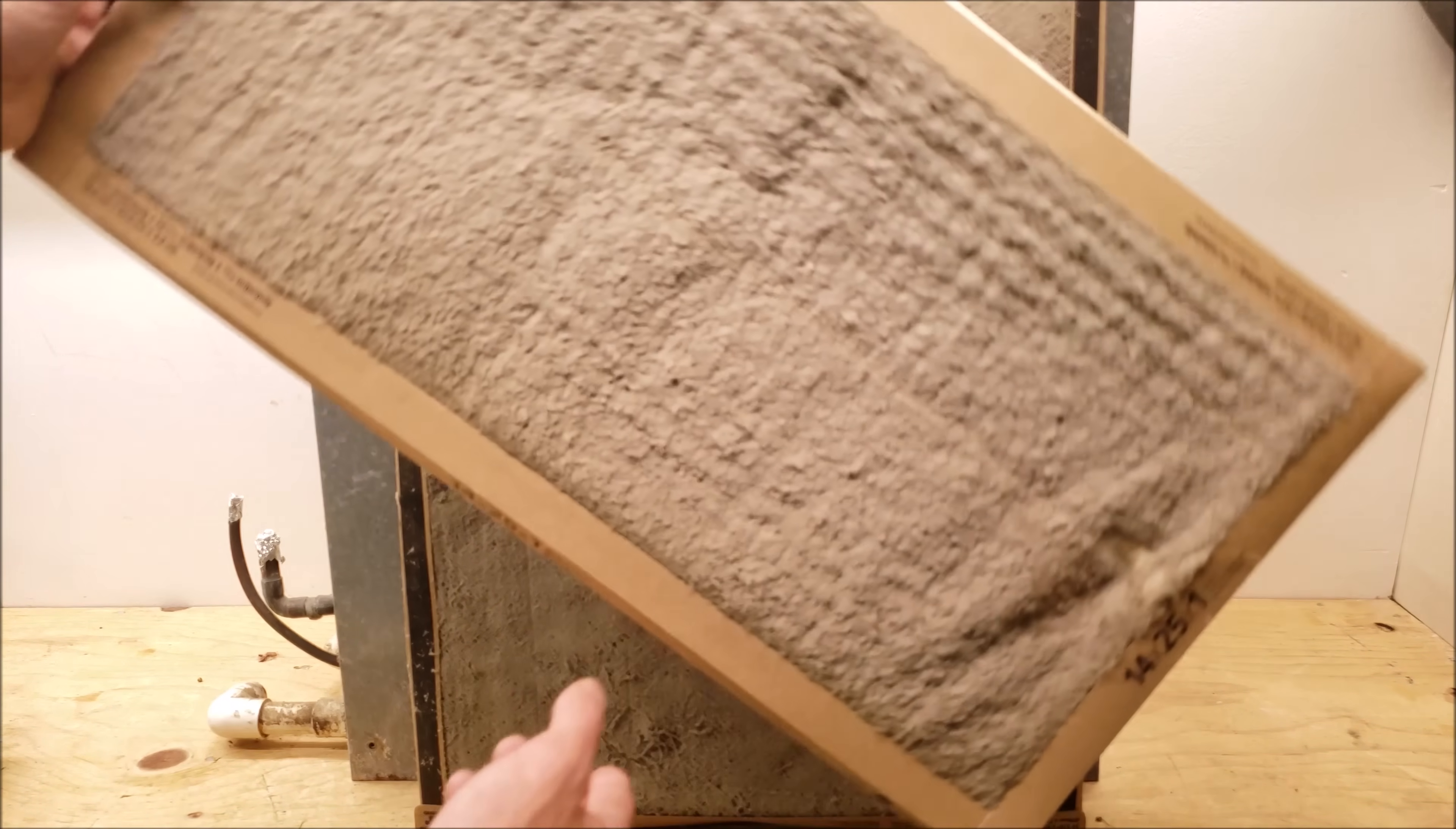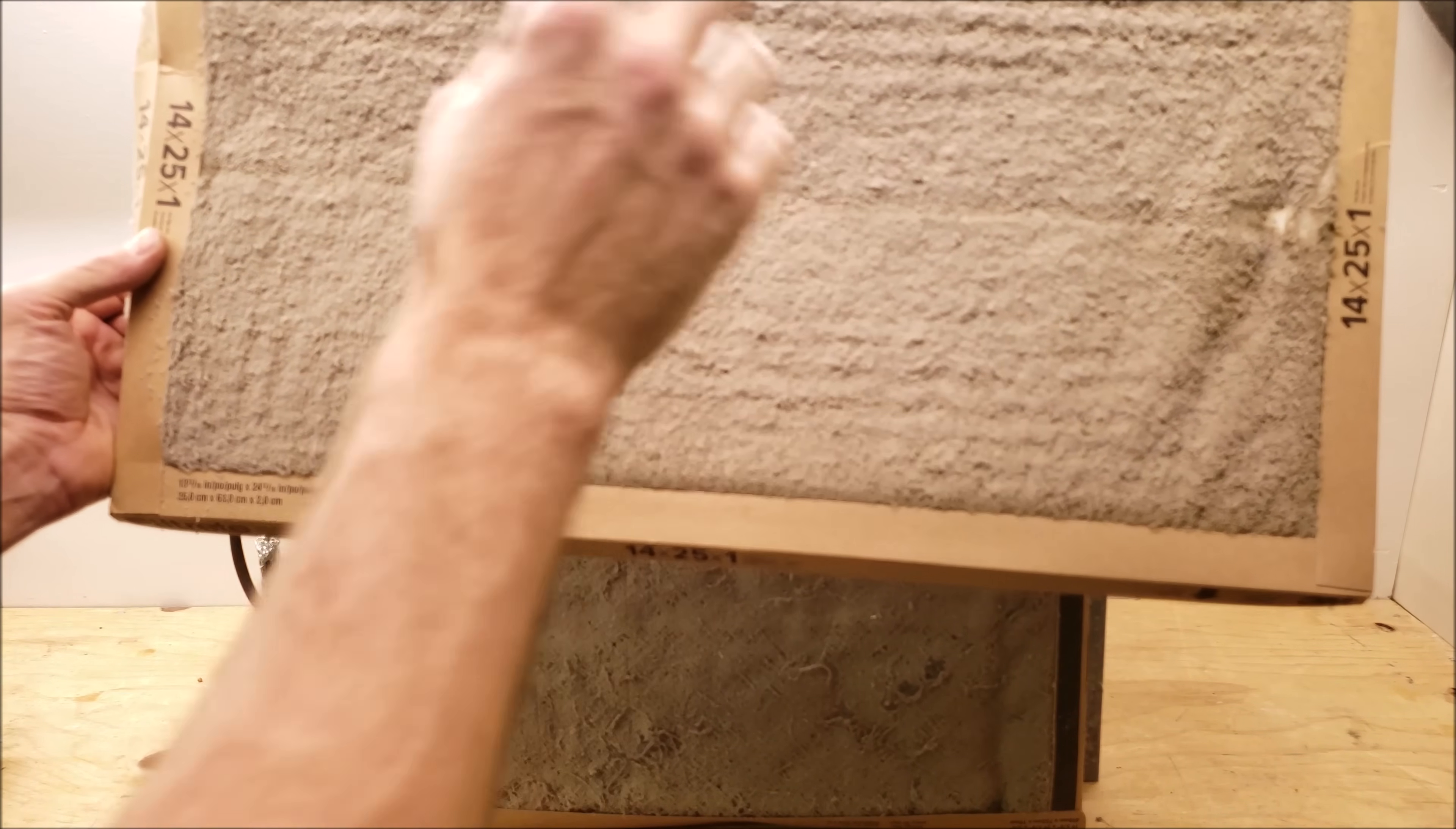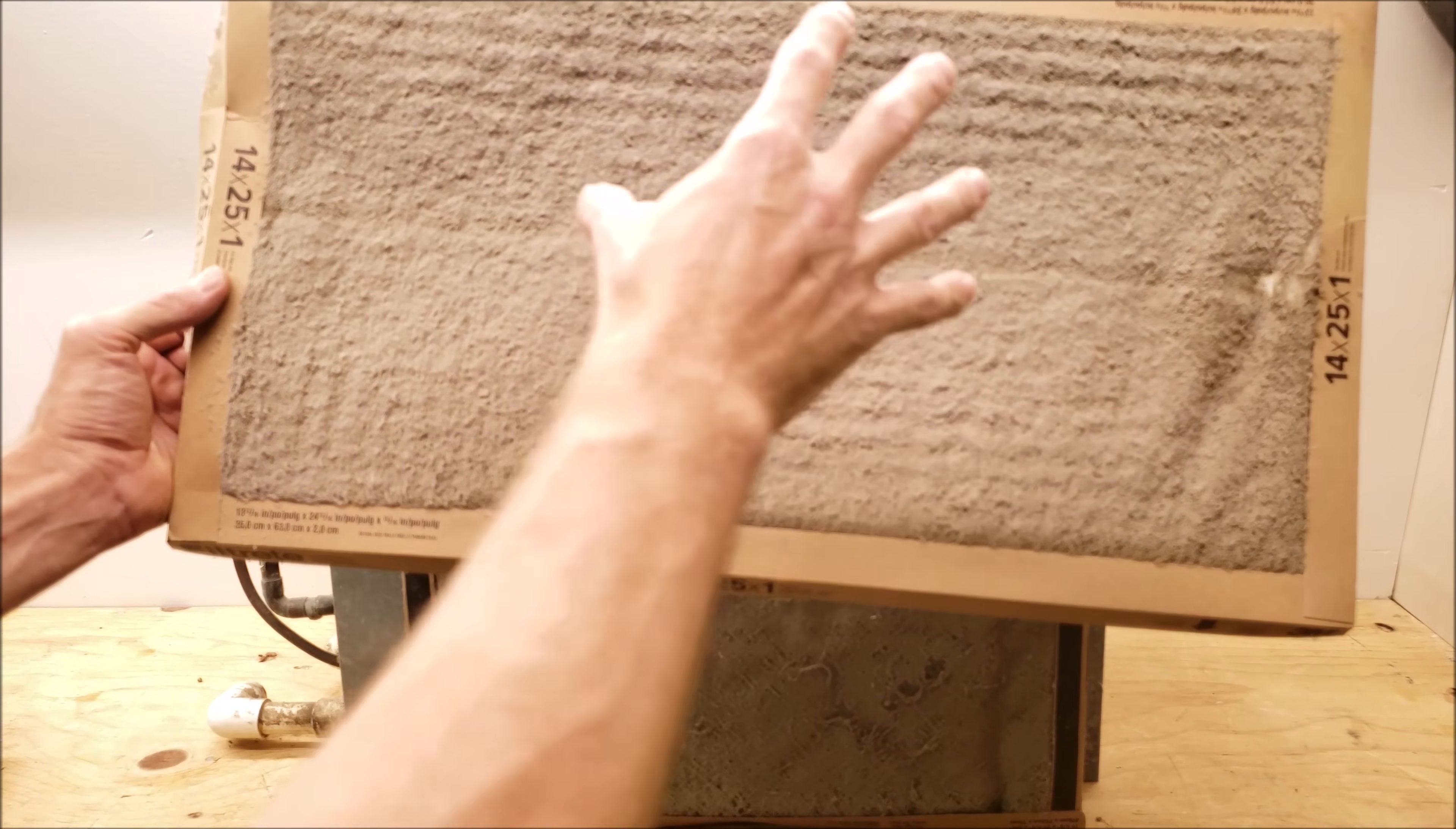This air filter right here ended up killing a blower motor. So it was a variable speed blower motor and what happens when you have clogged airflow, a variable speed or ECM multi-speed motor is going to try to push harder to try to get the air into the ductwork. So it has torque value set in the motor itself and what's going to happen is it's going to try to fight against the friction in the ductwork. But what happens is it draws too much amperage and it ends up potentially damaging itself. So in this case, that blower motor got damaged.